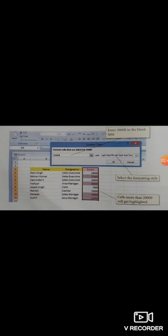Here we type 20,000 in the text box, and from the next text box we select the condition or the formatting that is applied to the cells that meet the criteria.